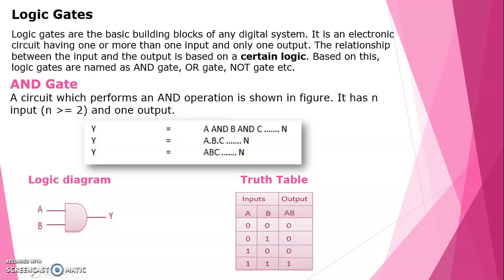Logic gates. Logic circuits are used in a computer to perform various operations. Logic circuits are built with logic gates. A logic circuit has two states: logic 0 and logic 1. A logic gate has one or more than one input and only one output.